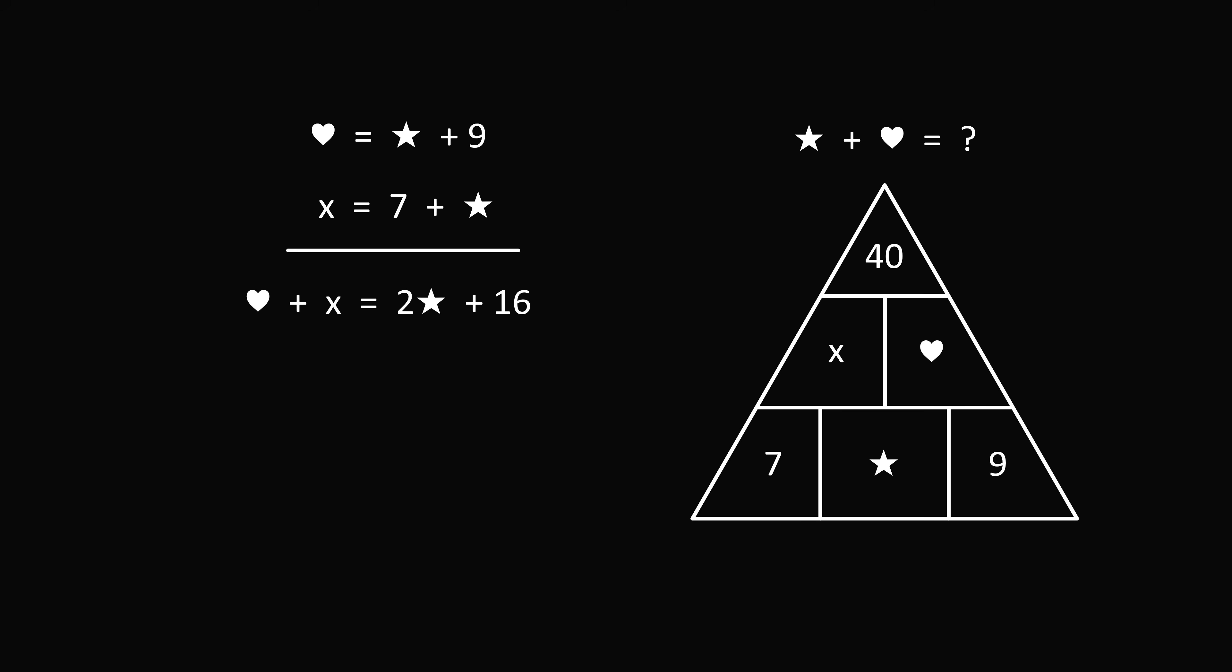Now we also have that x plus heart is equal to the number above it, which is equal to 40. So 40 is equal to heart plus x. But we also know that heart plus x is equal to 2 star plus 16. So these two equations must be equal to each other, which means that 40 is equal to 2 star plus 16. Subtracting 16 from both sides gives that 2 star is equal to 24. Dividing both sides by 2 gives that star is equal to 12. We can now substitute all the way to the first equation so that we have heart is equal to 12 plus 9, which equals 21.